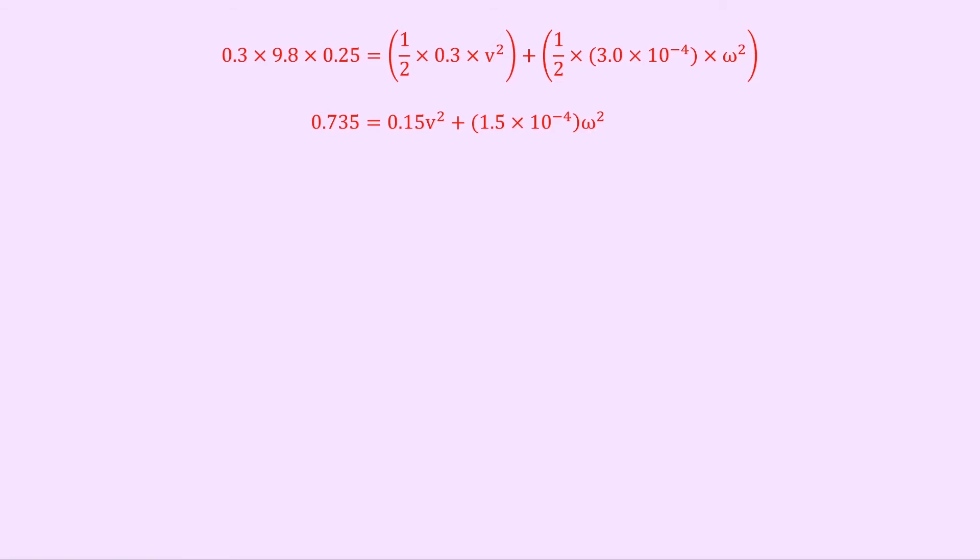Now remember the expression relating linear velocity and angular velocity, v equals r omega. So we can rearrange this for omega to get omega equals v over r, and then we can replace this expression for omega with v over r. So we end up with 0.735 equals 0.15v squared plus 1.5 times 10 to the minus 4 v squared over r squared.